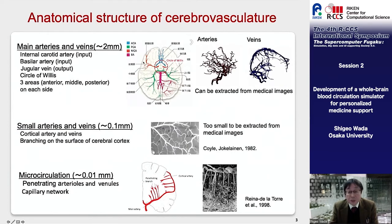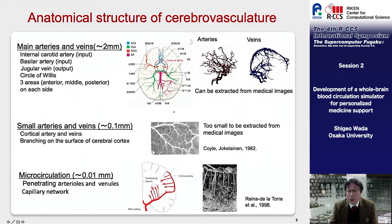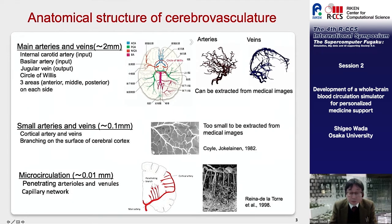Blood enters the brain from the internal carotid arteries and vertebral arteries, joining at the circle of Willis at the bottom of the brain. Blood vessels branch from this circle to the arteries covering three areas — anterior, middle, and posterior — on each right and left side. The actual shapes of main arteries and veins with a diameter larger than 2 mm can be obtained from medical images such as MRI and contrast imaging. Smaller arteries and veins branching from the main blood vessels are located on the surface of the cerebral cortex, and their morphology cannot be obtained from medical imaging.